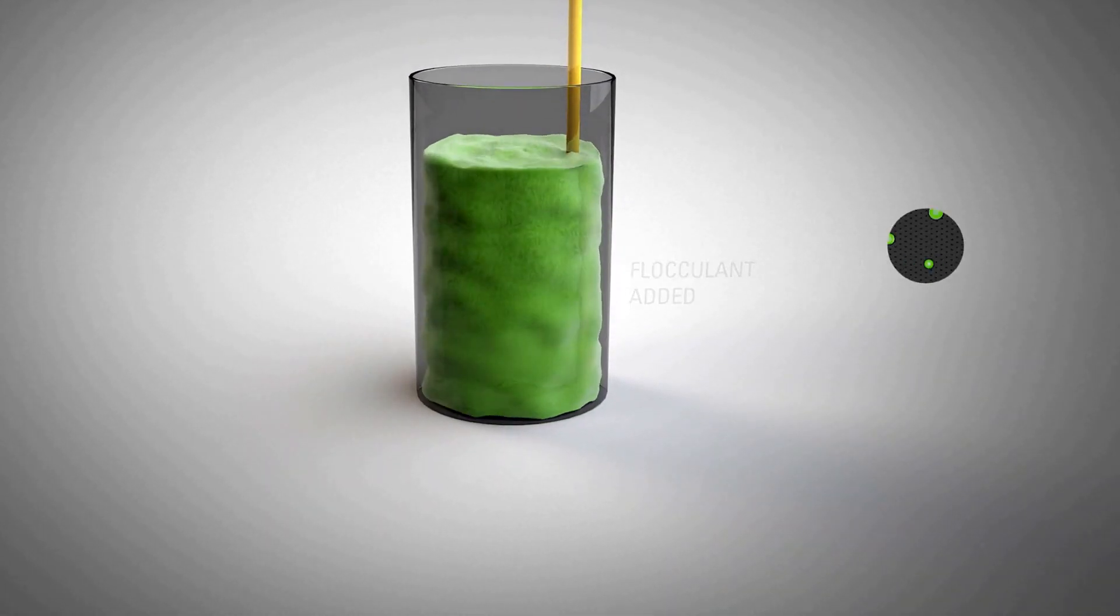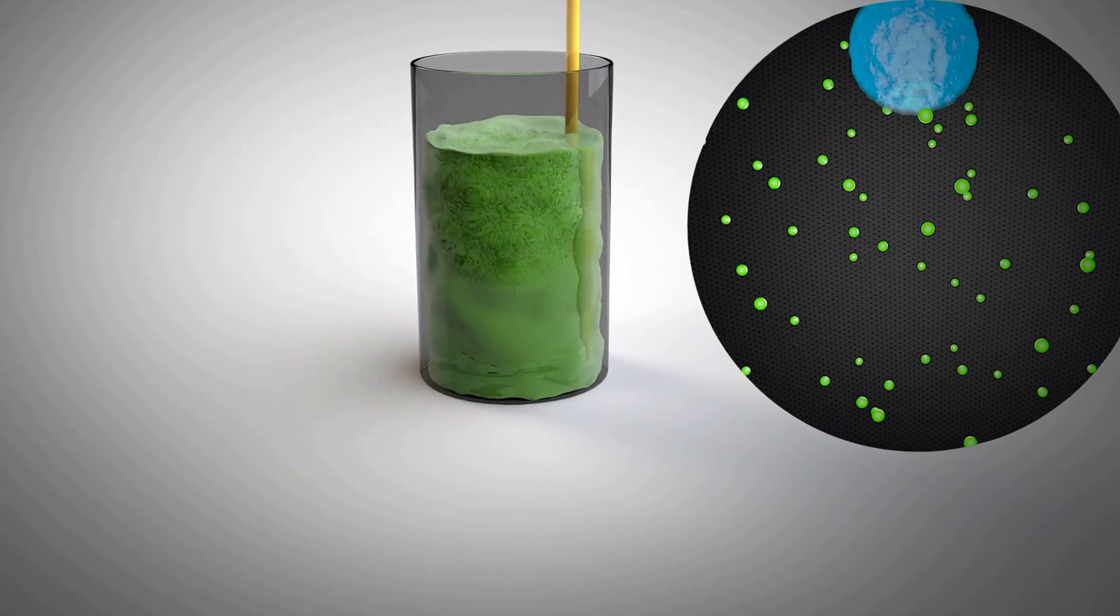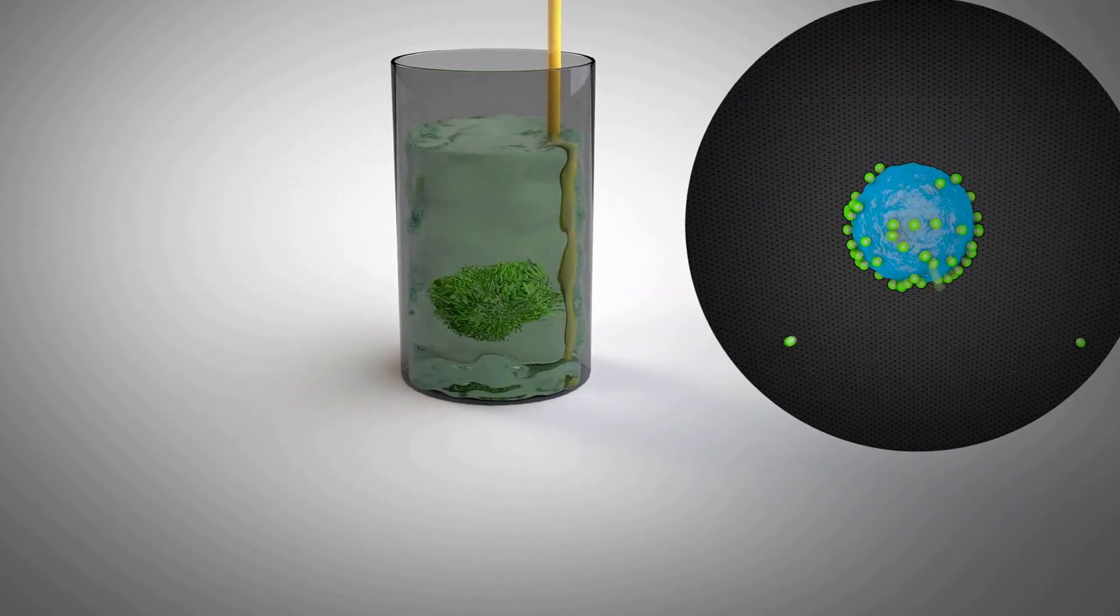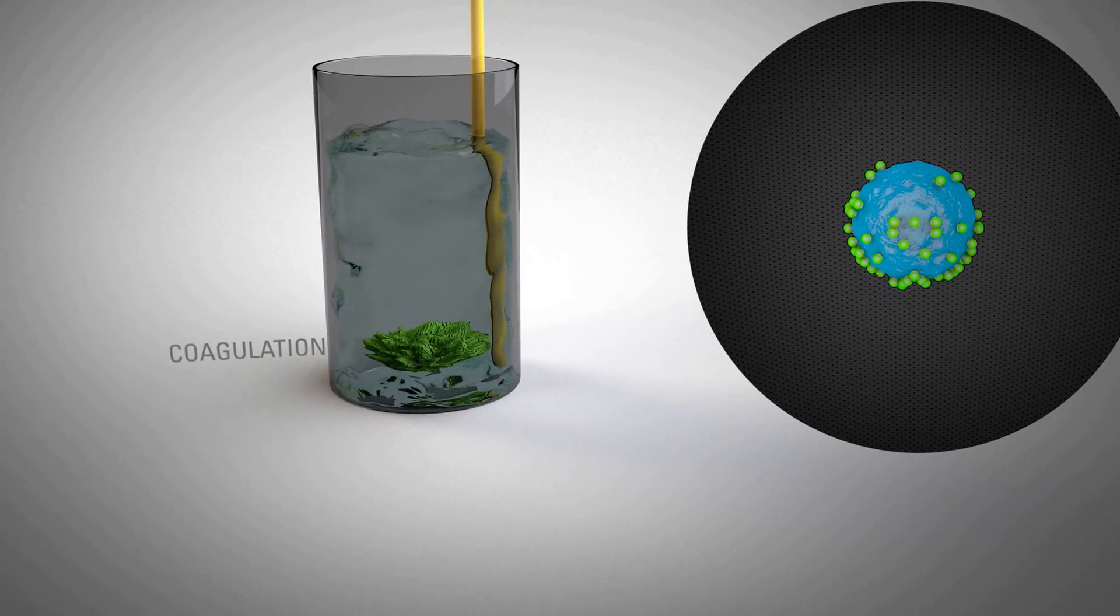To separate the smallest particles, environmentally friendly polymers can be used to join particles together, increasing their mass and ability to be processed by the centrifuge.